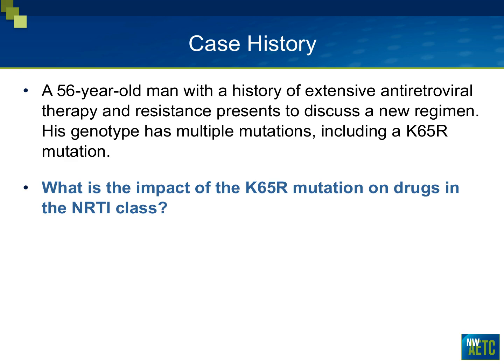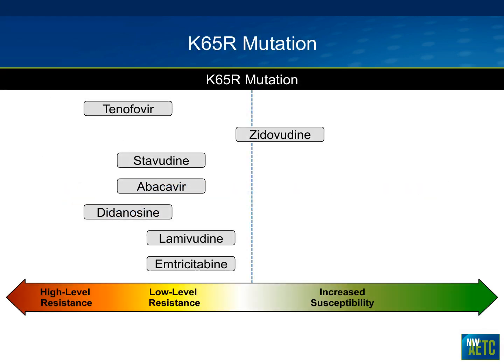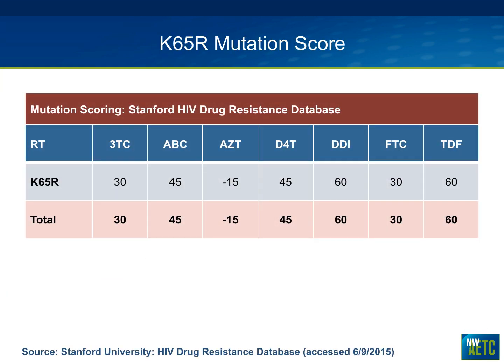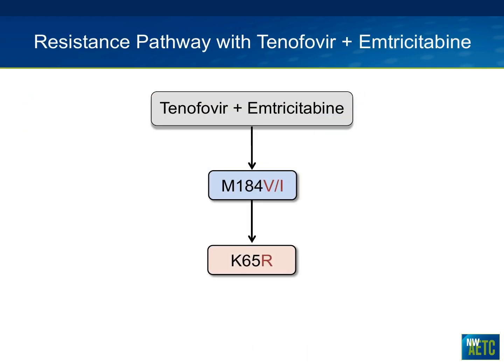The last issue is K65R. A 56-year-old man with extensive ART history presents with a genotype showing a K65R mutation. What is the impact of K65R on the NRTI class? The answer: the only drug that works well with K65R is zidovudine. There are other drugs with partial activity, but zidovudine is the antidote to K65R. In the Stanford database, AZT shows hypersusceptibility — negative numbers — while all other NRTIs show clearly reduced efficacy.